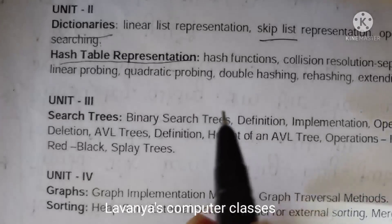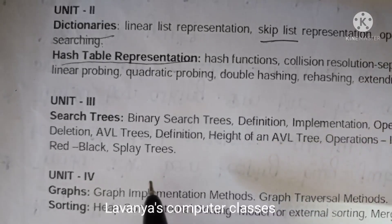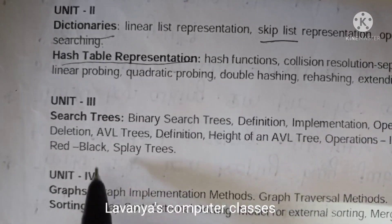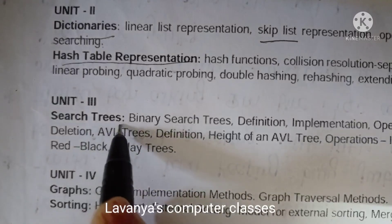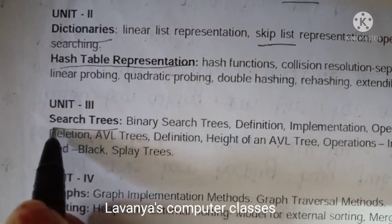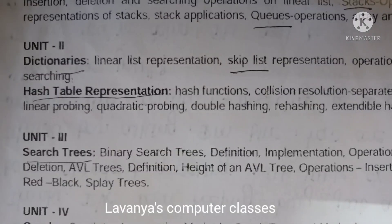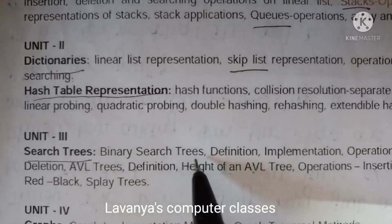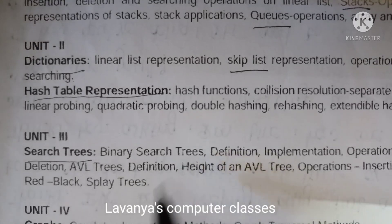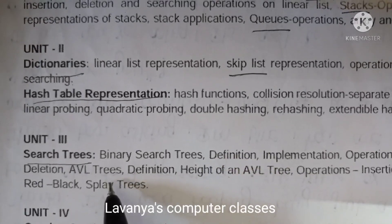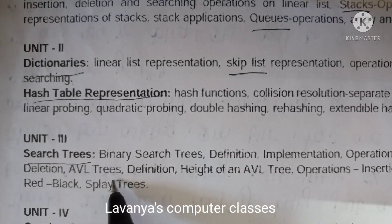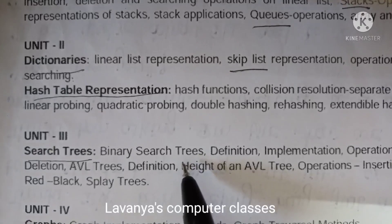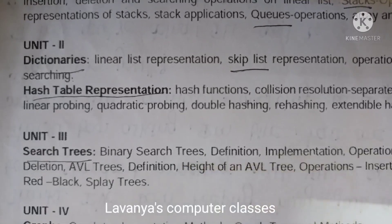Next in unit 3, there is only one chapter: search trees. In the search trees, the most important are binary search trees and AVL trees. AVL trees and binary search trees are very, very important.